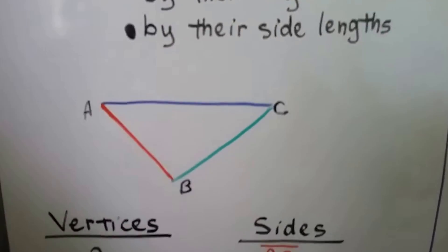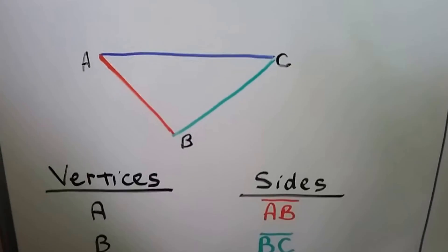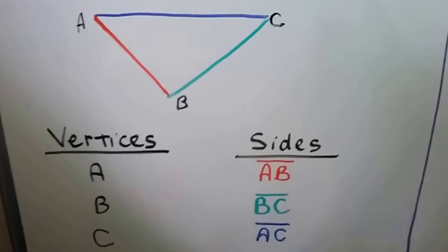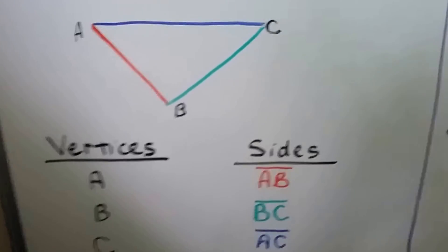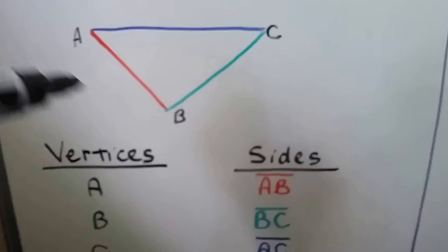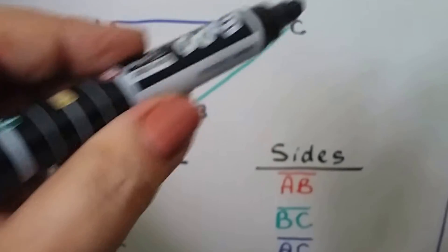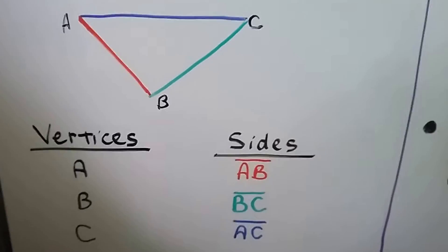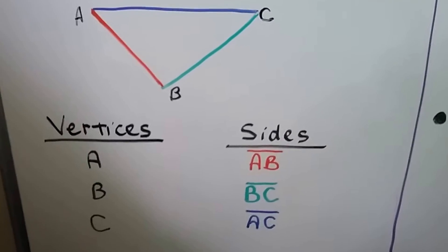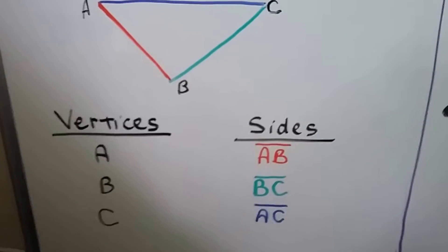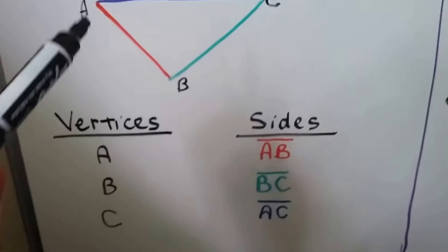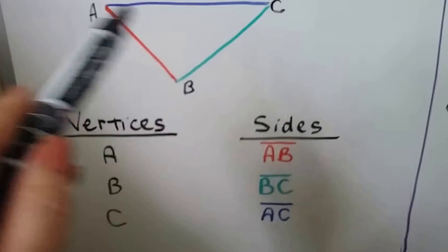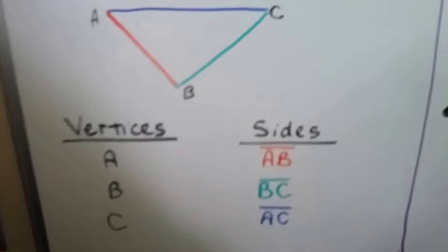Let's take a look at this diagram. This is triangle ABC, named for its vertices. We have vertex A, vertex B, and vertex C, and we can see the sides — the segments. We have segment AB, segment BC, and segment AC.